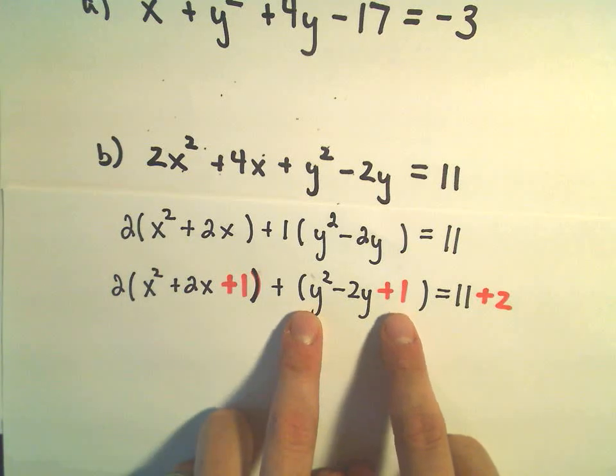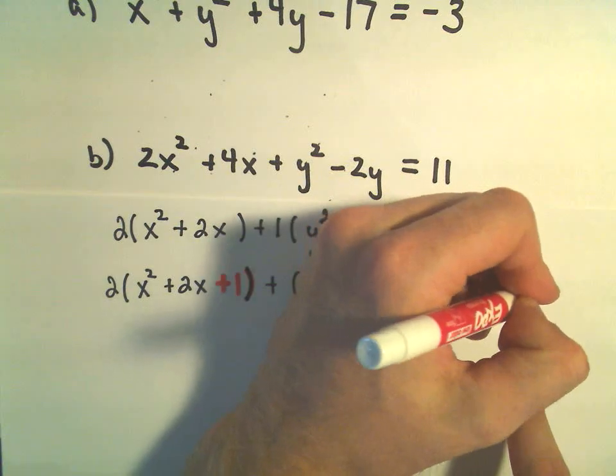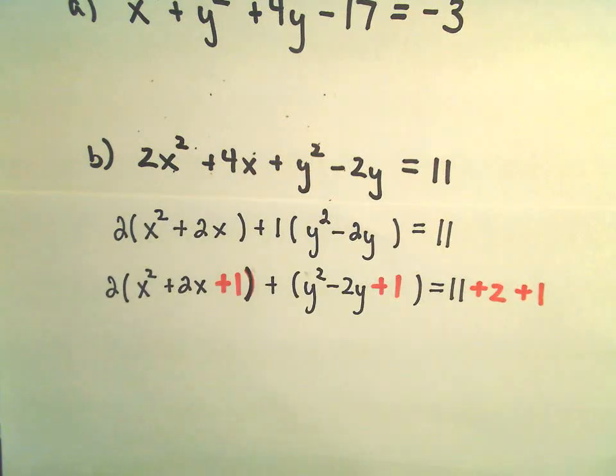Same thing when we get rid of the other set of parentheses. There would be an additional plus 1. So I'm going to have to add another 1 to the right side as well.